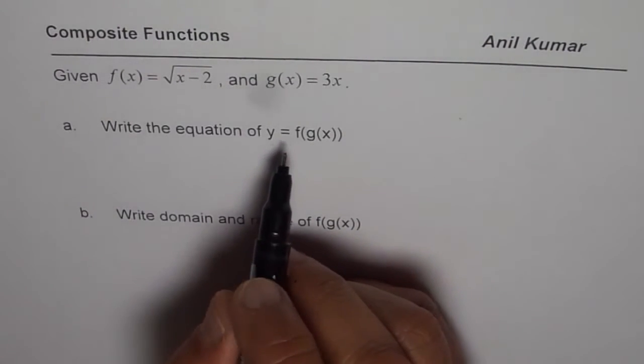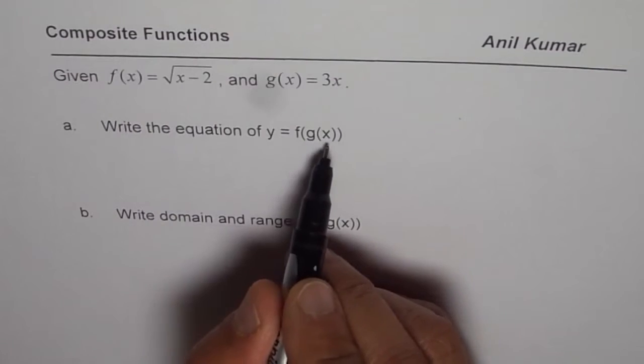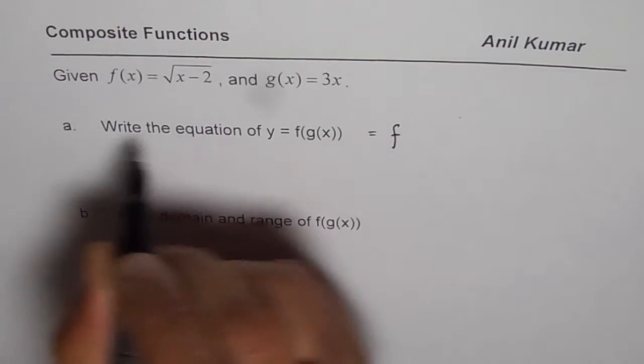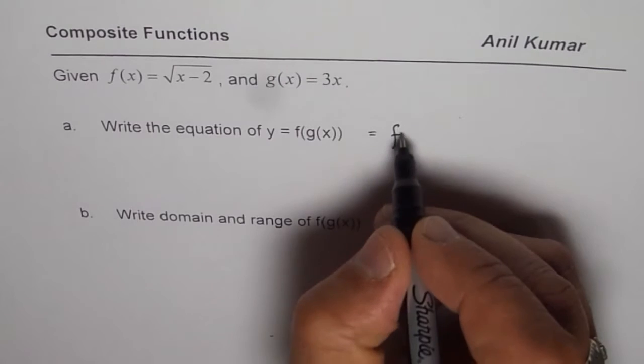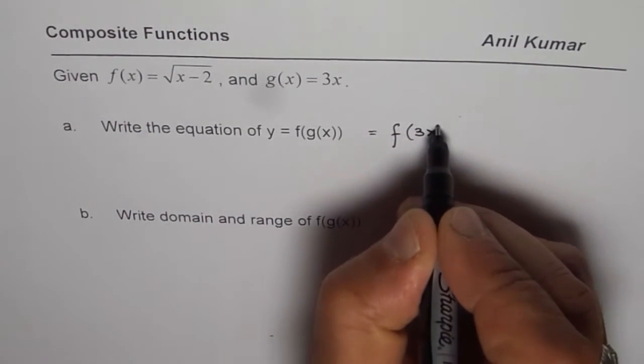So let's begin by writing the composite function f(g(x)). It really means f of what is g(x)? It is 3x. So f of 3x.